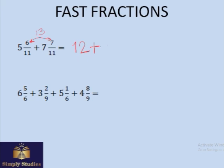That means there will be 1 whole and 2/11 extra. So the end result is 13 whole 2/11. To explain further: 13/11 is equal to 1 whole and 2/11.